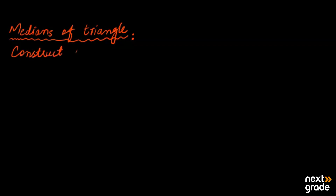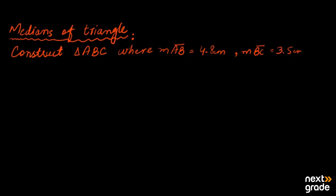The first question is: construct triangle ABC. The measurements given are AB = 4.8 cm, BC = 3.5 cm, and AC = 4 cm. Now let's see the first working, which is to find the centroid here.